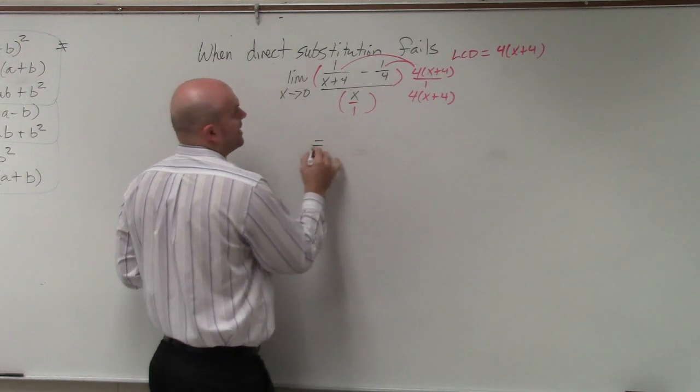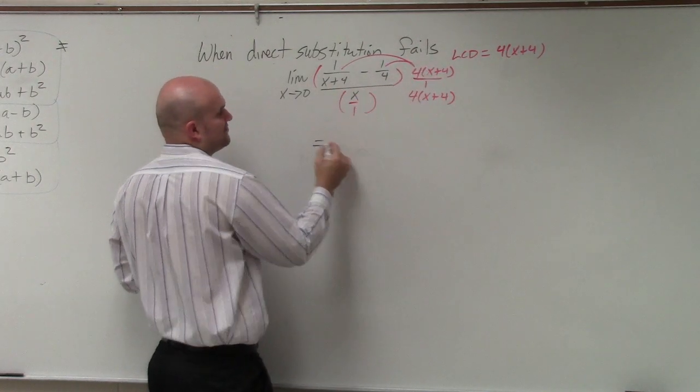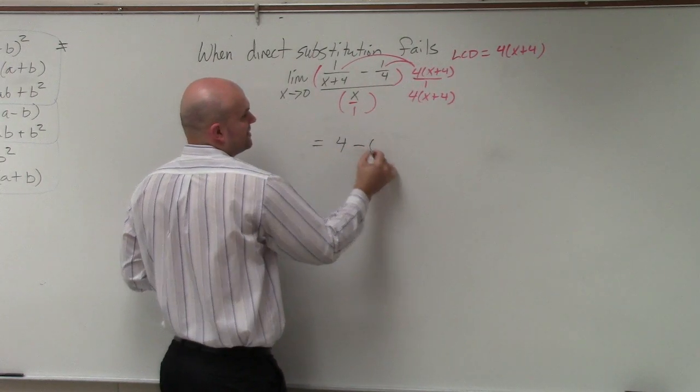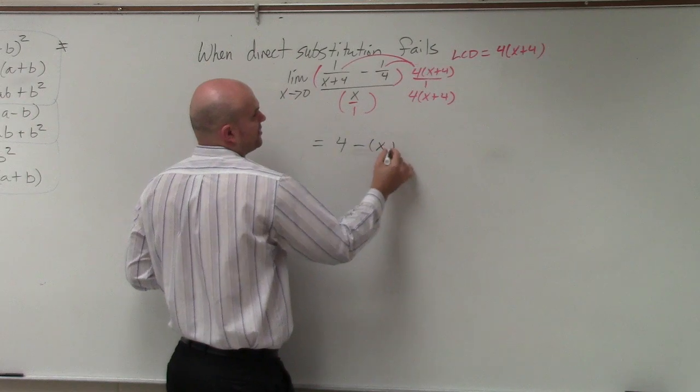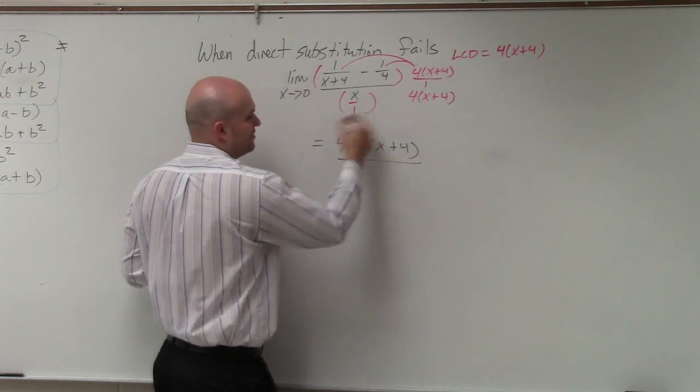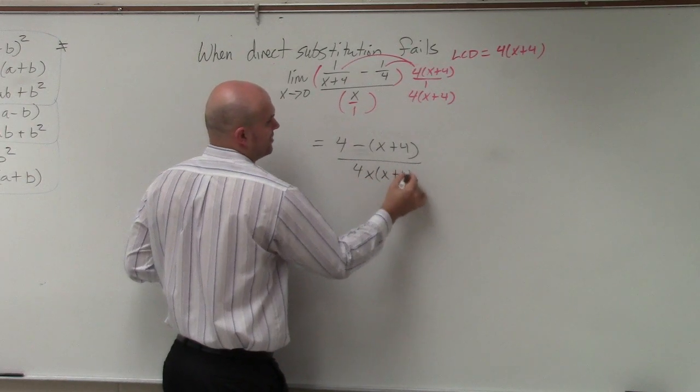So by doing that, I now obtain x plus 4 and x plus 4 divide out, so that leaves me with 4. The 4's divide out, that leaves me with a negative x plus 4. And here, I don't have anything but that 4 and the x multiply to give me 4 times x times x plus 4.